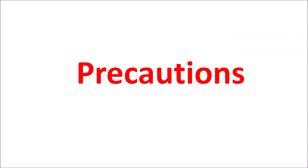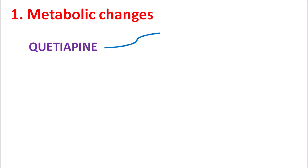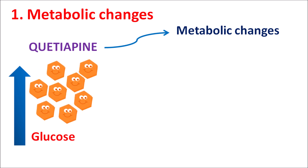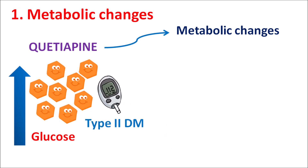The first precaution is metabolic changes. Use of Quetiapine can produce metabolic changes in patients. It can increase glucose levels, so with increased serum glucose levels the patient may have altered FBS — fasting blood sugar — values. This is more important in patients with type 2 diabetes mellitus where they are already having elevated glucose levels. In such patients, Quetiapine should be carefully used as this drug further increases glucose levels.